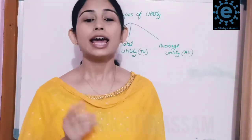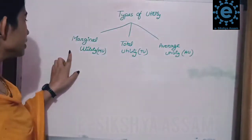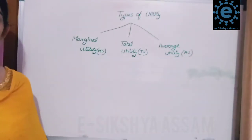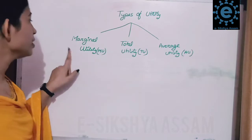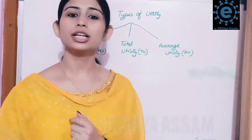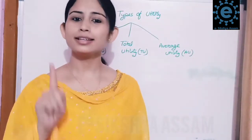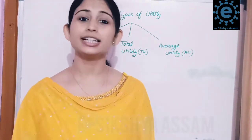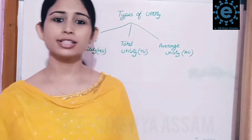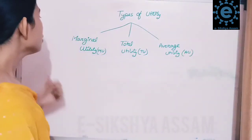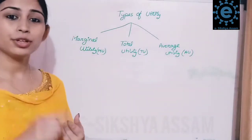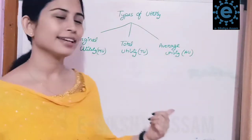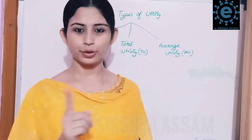Utility is divided into three types. The first one is marginal utility, denoted as MU. The second one is total utility, denoted as TU. And the third one is average utility, denoted as AU.